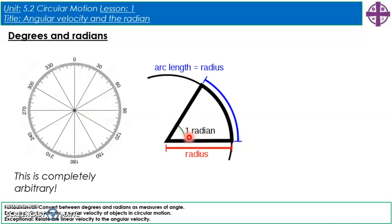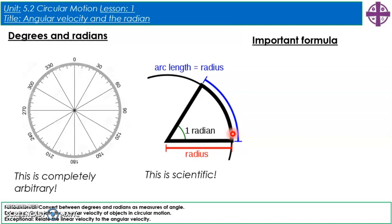When we have an angle of one radian, the angle in radians times the radius gives the length of the arc — so the arc length equals the radius. This is much more scientific and very useful. The formula is: arc length = theta × r, where theta must be measured in radians, not degrees.